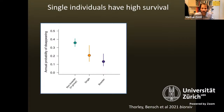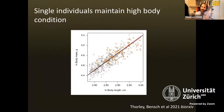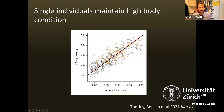When we compared survival of single individuals to other types in the population, we found that the annual probability of disappearing for single individuals is statistically no different from breeders, and is actually lower than for non-breeders. When we examined body condition — expressed as the regression between body length and body mass — single individuals showed no difference from all other group-living individuals, indicating no trouble finding food or surviving on their own.